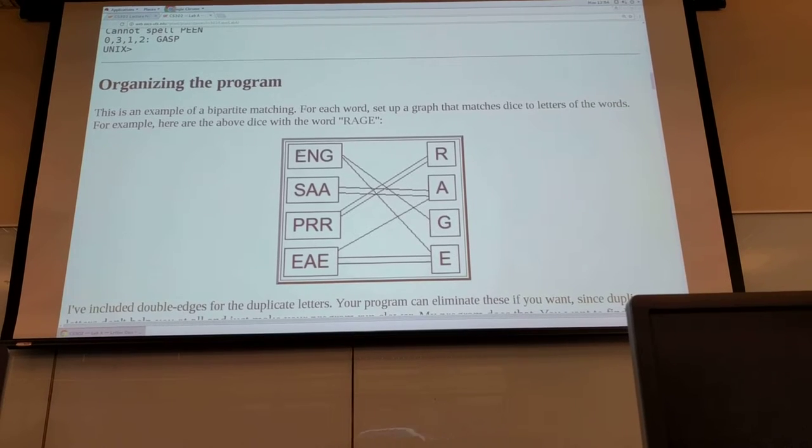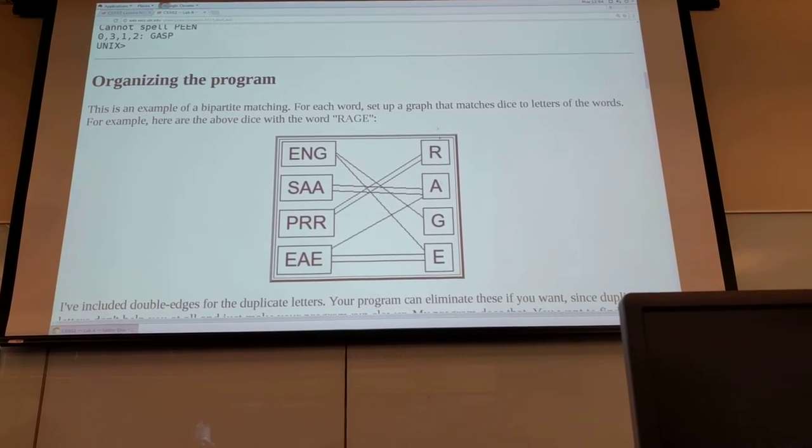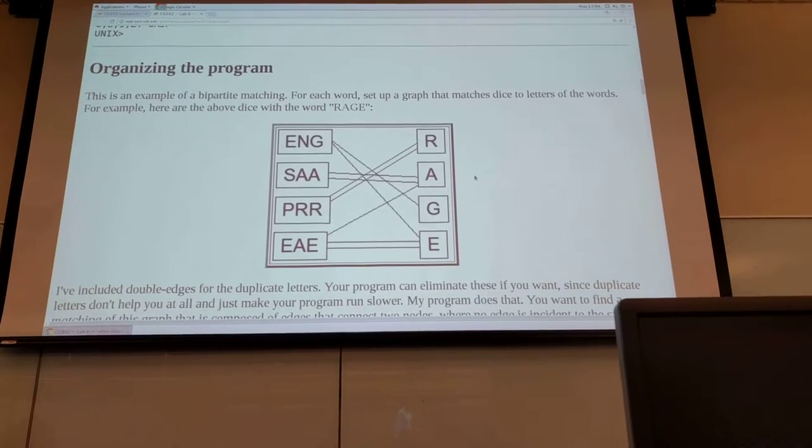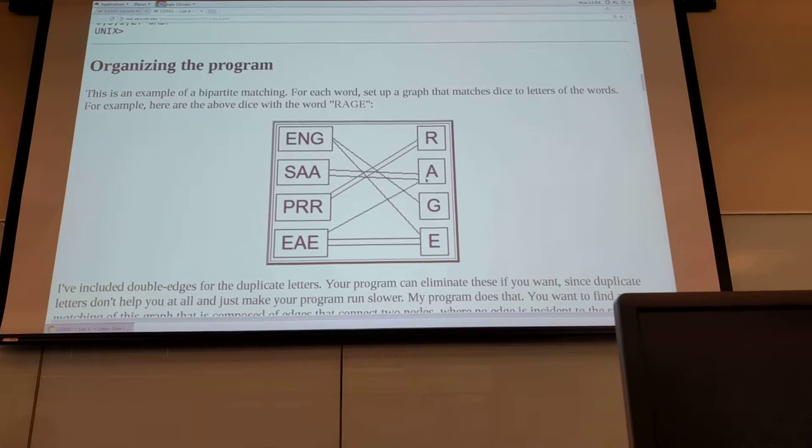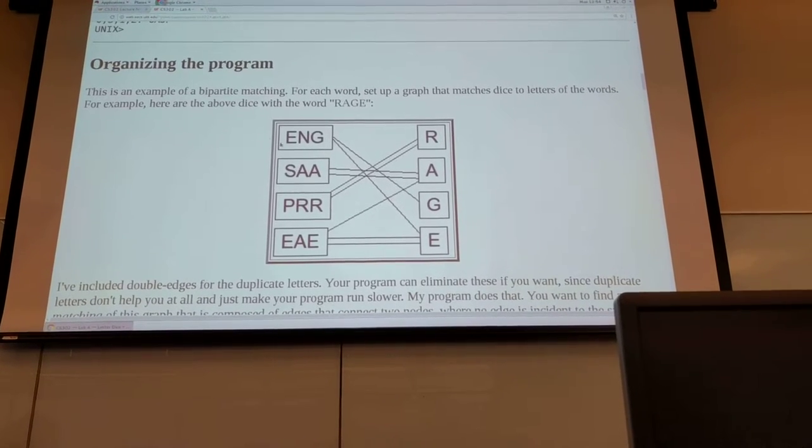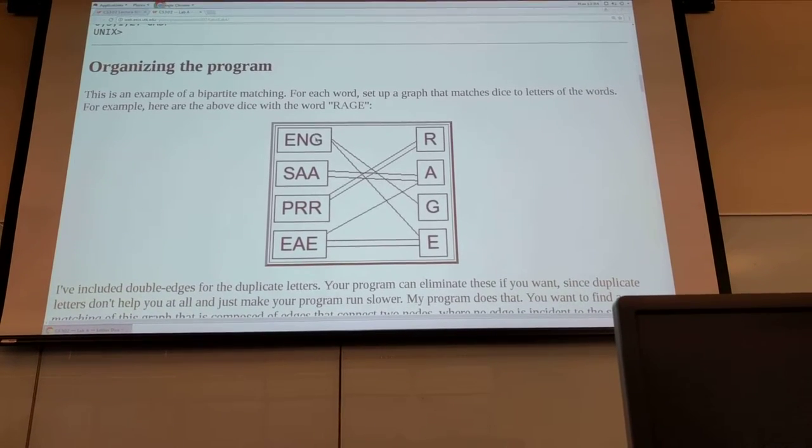Using the bipartite graph you can set it up so that on one side you have the dice, on the other side you have the words you're trying to spell, and then you'll draw an edge where the letter that you're trying to spell for the word matches one of the letters that's on the die. So in this case E and G is connected to the G because it has a G in it and also the E.